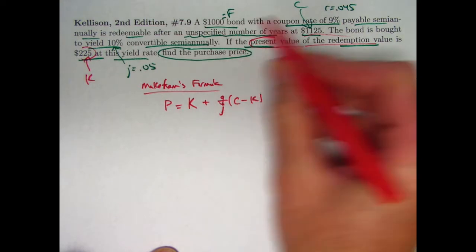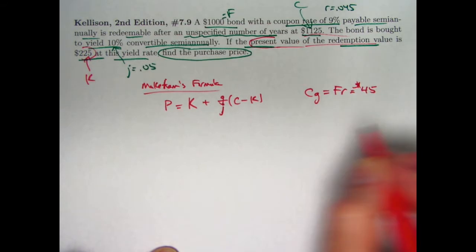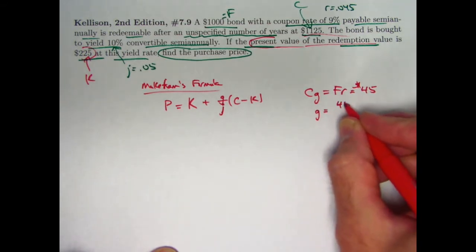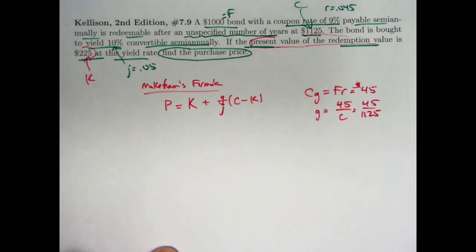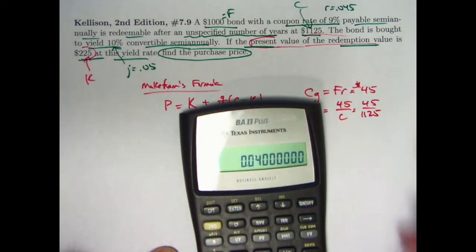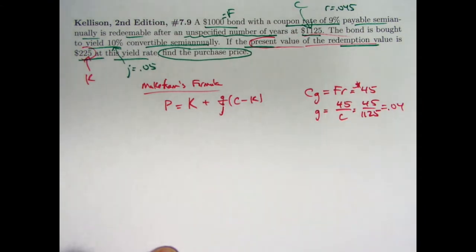F is 1,000, R is 0.045. The coupon amount is $45. So we can find little g easily enough here. 45 divided by C, which is 45 divided by $1,125. This comes out pretty nicely. 45 divided by $1,125 is 0.04. 4% is little g. That's the modified coupon rate.